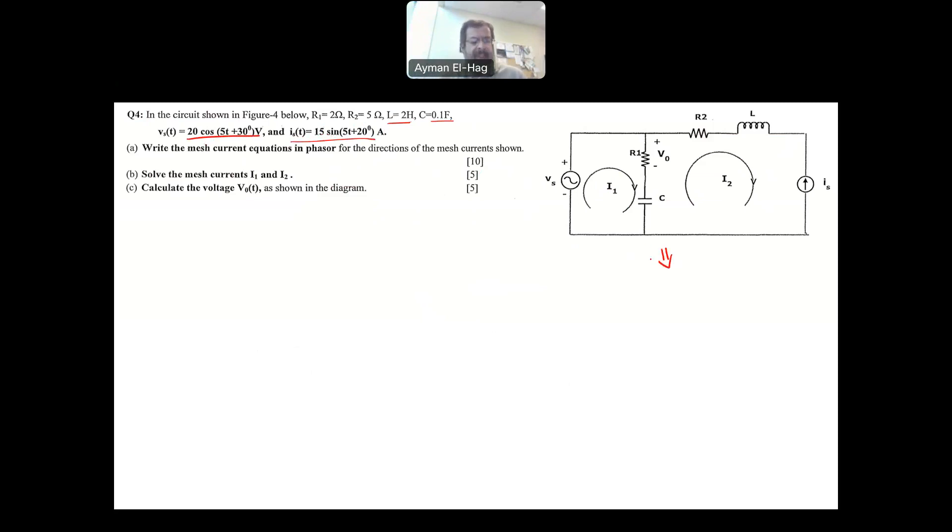Your Vs is given as 20 cosine 5t plus 30, and your Is is given as 15 sine 5t plus 30. So we have to change the time domain into a frequency domain. We need to convert this circuit to a circuit that is basically in frequency domain. So we'll start with the sources. The first source, Vs equals 20 cosine 5t plus 30. What you have to do is have the two sources either as a cosine or as a sine before you represent them as phasors.